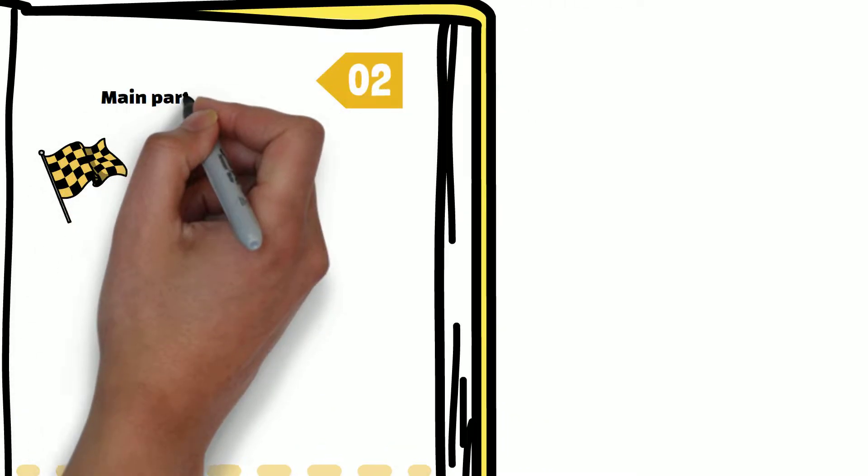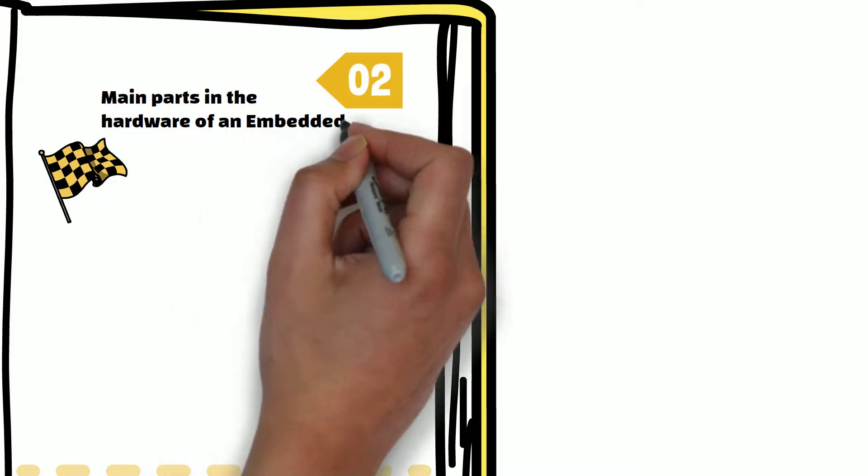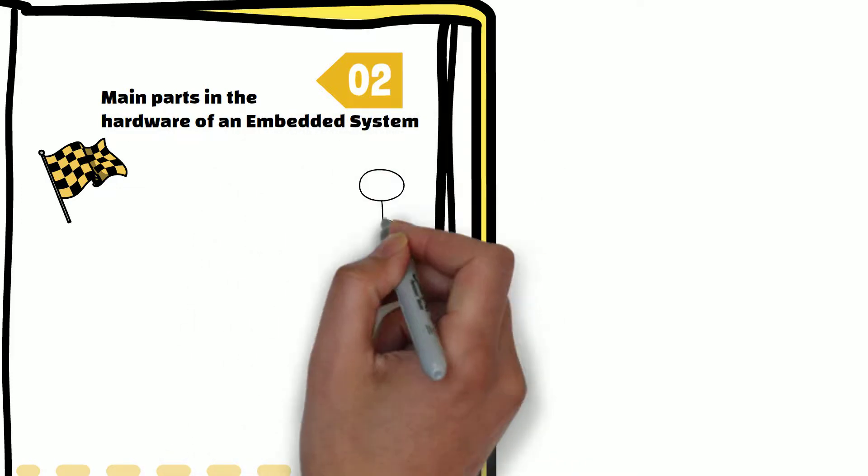Let us first take a look at the main parts in the hardware of an embedded system. An embedded system typically consists of the following parts.